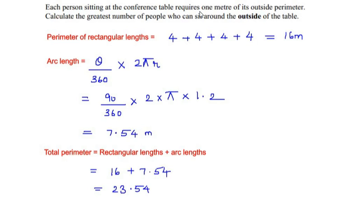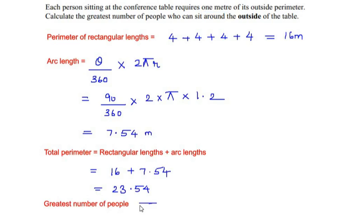The total outside perimeter is 23.54 meters. Since each person requires 1 meter of outside perimeter, the greatest number of people who can sit around the outside of the table is 23 people — we round down the total perimeter to get the answer.